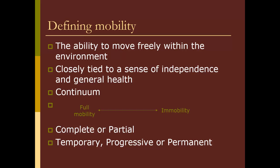We also can have different timelines related to mobility. Sometimes it's temporary, like the example of a cast or even Bell's Palsy, which tends to resolve. Sometimes it's progressive — there are many neuromuscular diseases that are progressive in terms of their impact on mobility. And sometimes the immobility is permanent, such as in the case of stroke or some sort of neurologic trauma.